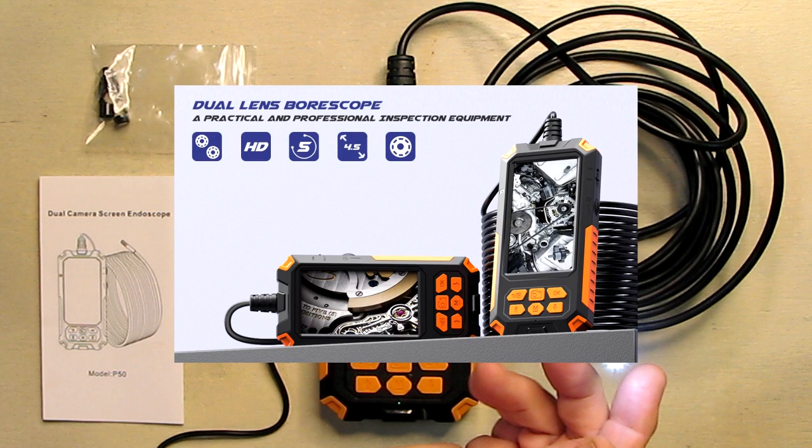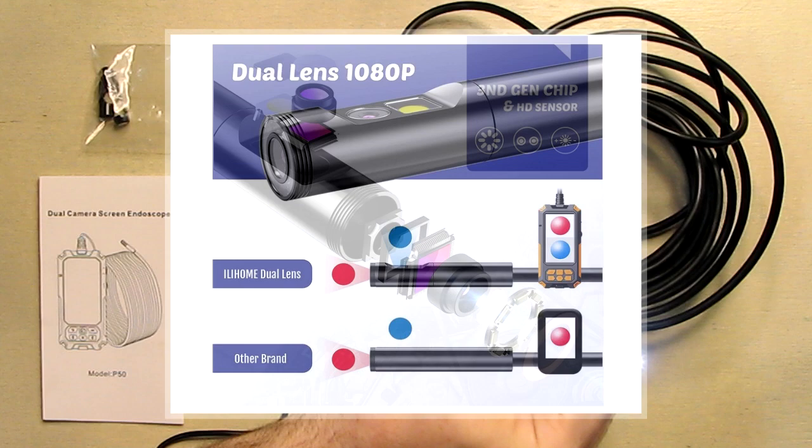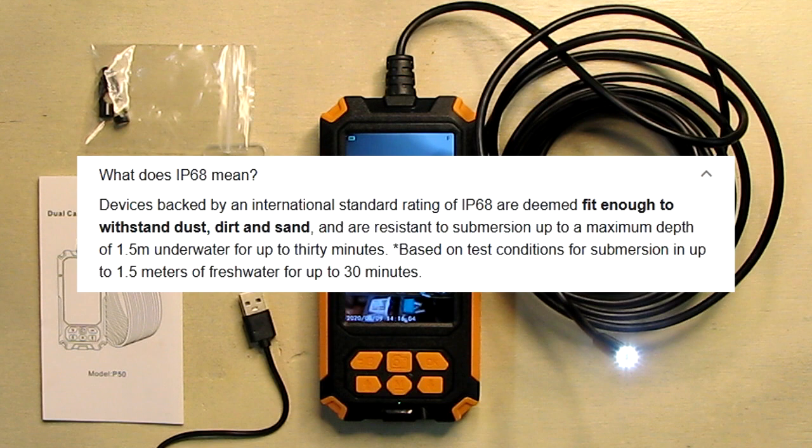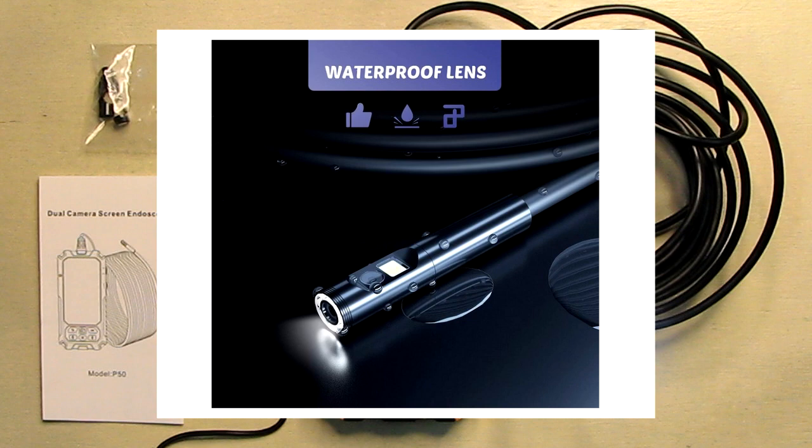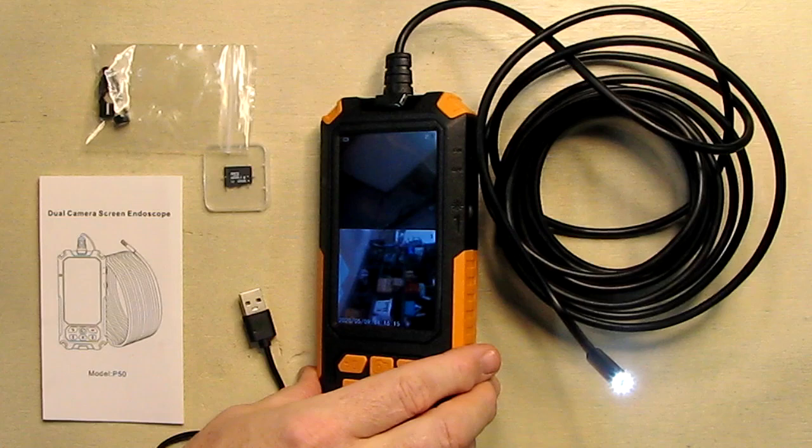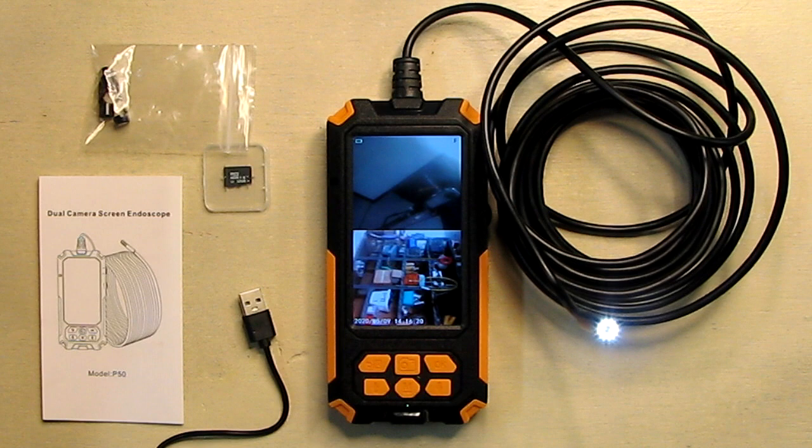The whole tip with the cameras and the long snake is IP68 waterproof, so you don't have to worry about it getting damaged. It's rated for one and a half meters at 30 minutes underwater. This has a nice 4.5 inch IPS screen, and the IPS means that as you change the angle, the screen doesn't dim, so it's one of the better type of screens out there.